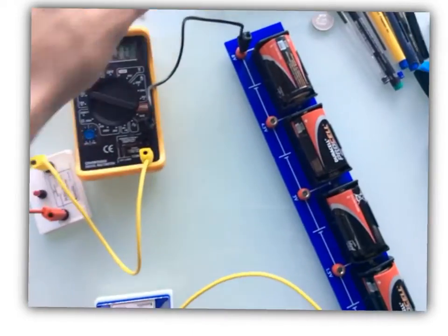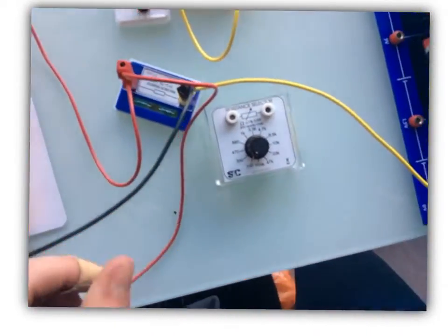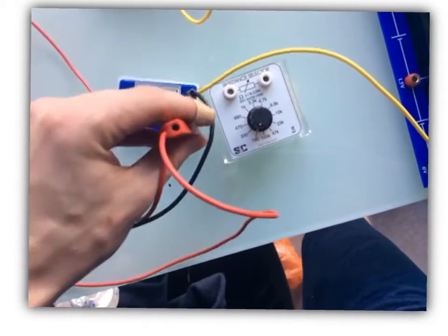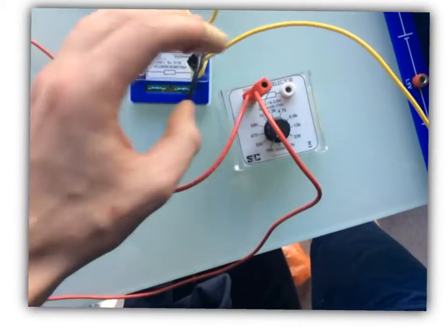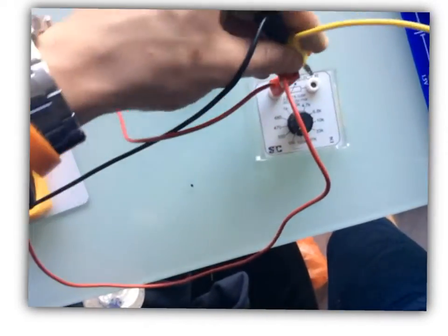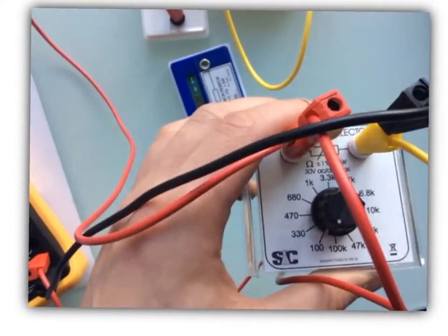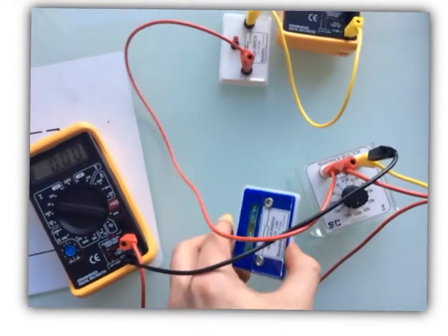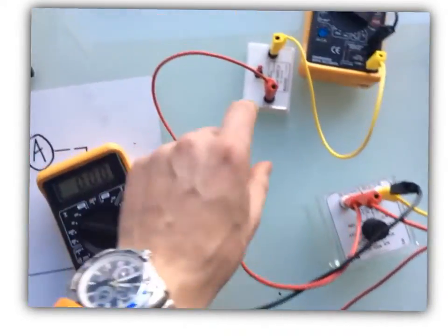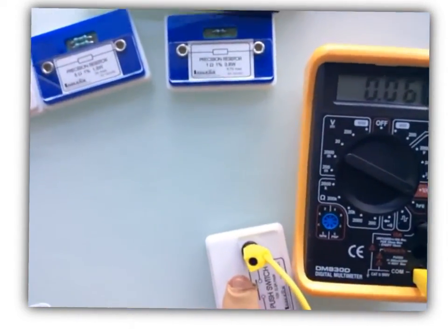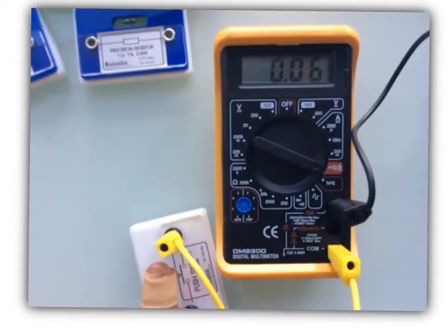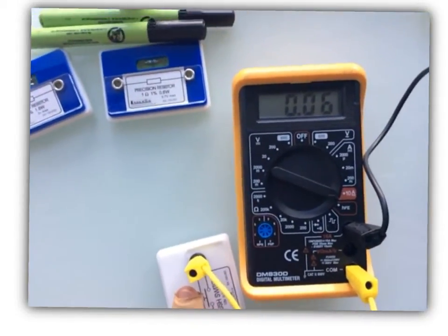Now what if we had a much bigger resistor? Here we go, a much bigger resistor. Let's put it into our circuit. This one is currently on a 100 ohm setting. If we click this again, we can see we're getting very small readings here.